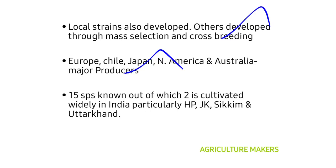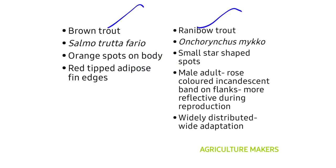There are about 15 species known in trout, out of which two are cultivated widely in India, particularly in Himachal, Jammu and Kashmir, Sikkim, and Uttarakhand. Those two species are the brown trout and the rainbow trout. The scientific name of brown trout is Salmo trutta fario. It has orange spots on its body and red-tipped adipose fin edges. The scientific name of rainbow trout is Oncorhynchus mykiss, and small star-shaped spots are found on its body.